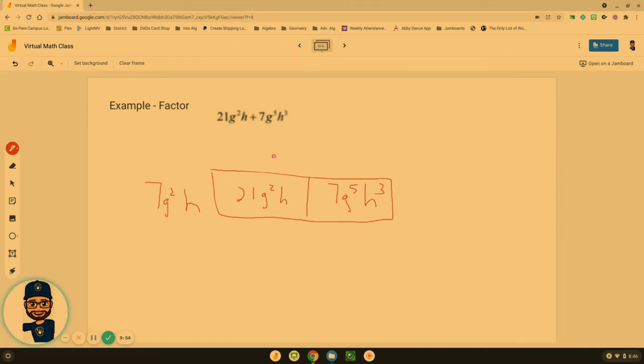Now I'm going to figure out what we have left to pull out. How do I need to multiply? So 7 times what is 21? That's a 3. G² times what is G²? No more. Just the one. I don't need any more. H times what is H? Nothing more. I don't need any more H's. So now we go to the next one. 7 times what is 7? That's a 1.